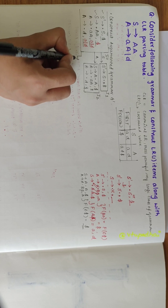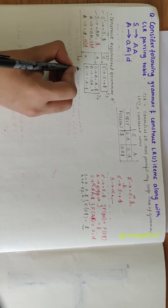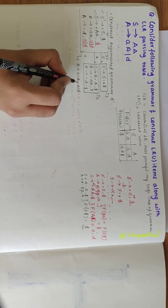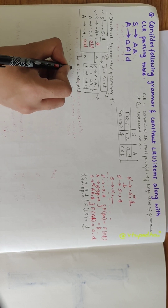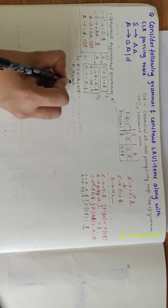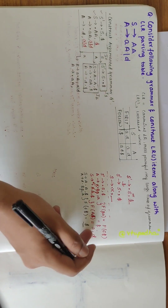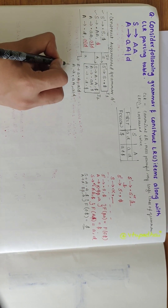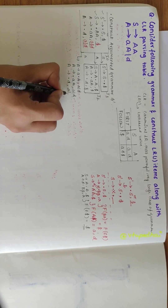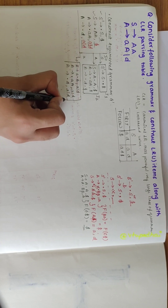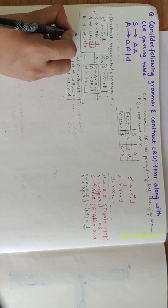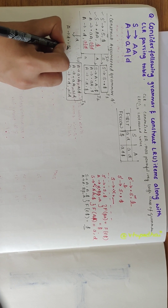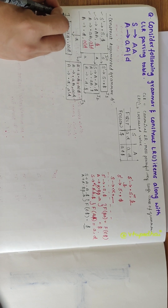For small a, I write A derives a dot A, a/d. After the dot I have capital A, a non-terminal, so I write A derives dot Aa and A derives dot d, both with lookahead a/d. I put this in a box and name it I3. Coming to d, I get A derives d dot, a/d. This would be my I4 item.